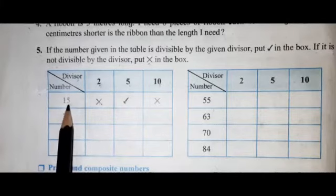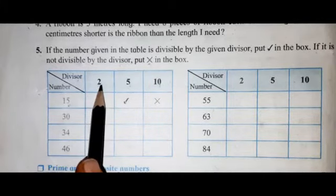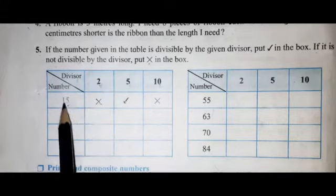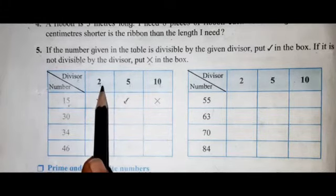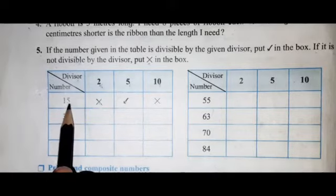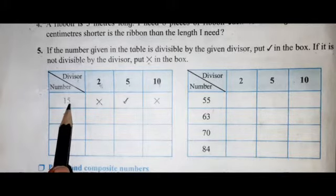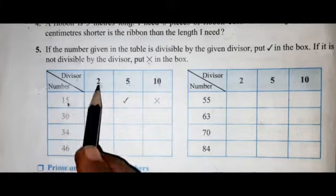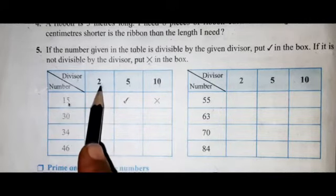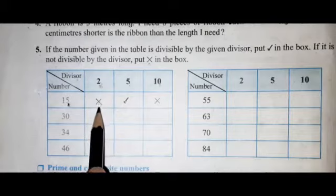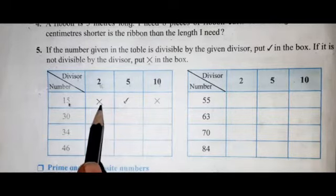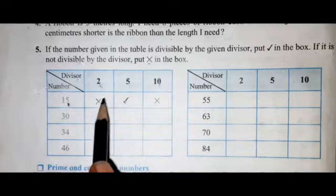The first number is 15 and the divisor is 2. Check the divisibility test of 2: a number is divisible by 2 if the unit place digit is 0, 2, 4, 6, or 8. Here the unit digit is 5, so the number 15 is not divisible by 2. Put a cross for the wrong answer.